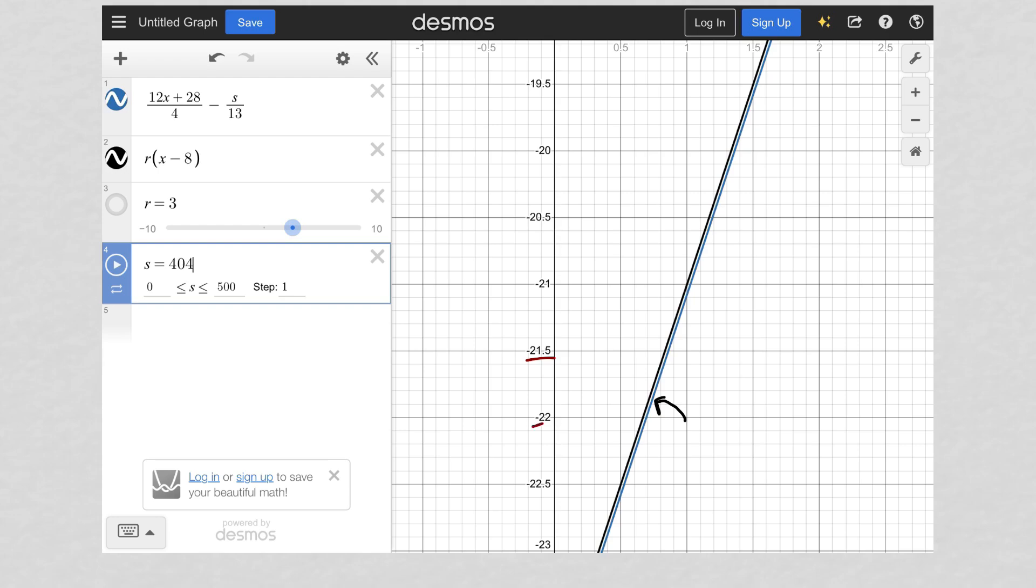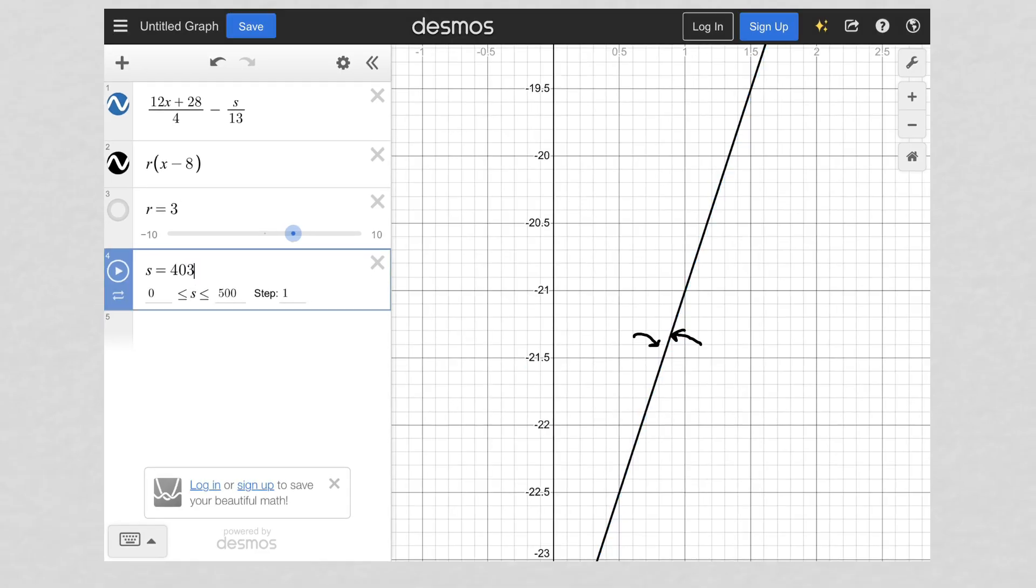So you can see, right, I'm negative 21.5, negative 22. I really zoomed in to make sure that I could see exactly where this overlapped. So at 404, again, I'm on the right. At 402, I'm on the left. So I know at 403, this truly is a correct answer.